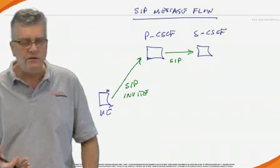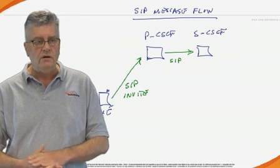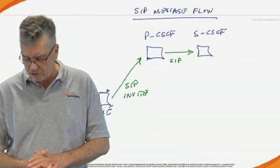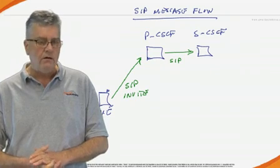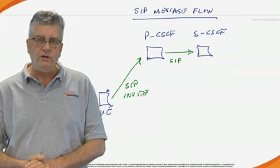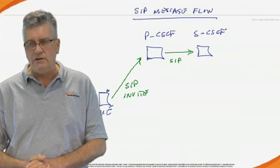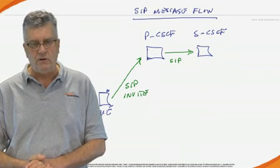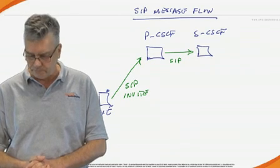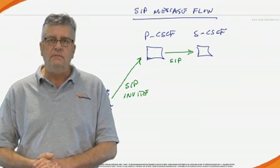The proxy CSCF learns the identity of the serving CSCF for this user during the initial IMS registration. And at this point, you may say, well, where does the I-CSCF come into play? Well, up until this point, it doesn't. It doesn't need to come into play and be interrogated until we get to the terminating part of the call leg. And we'll look at that aspect in a future video.